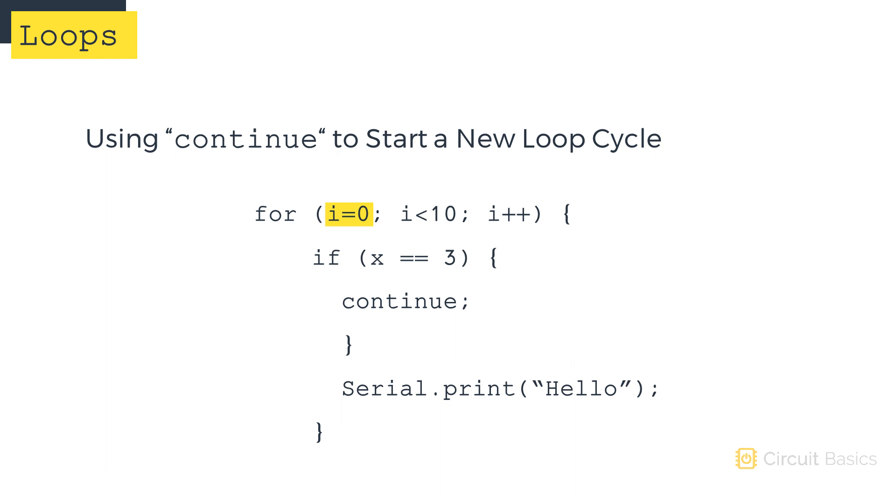The loop control variable keeps its value, so the count is not lost. Continue is a way to cut short an iteration of the loop when a certain event occurs.